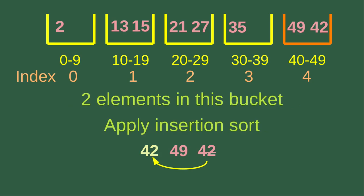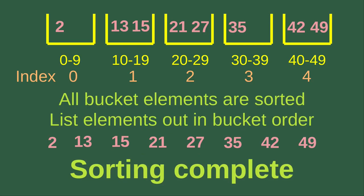Moving to the next bucket, index 3, there is only one element, so it is already sorted. For the final bucket, index 4, there are two elements. We apply insertion sort and see that 42 is smaller than 49, so 42 should go before 49 — we move 42 before 49 to complete the insertion sort. Now all bucket elements are sorted inside their respective buckets.